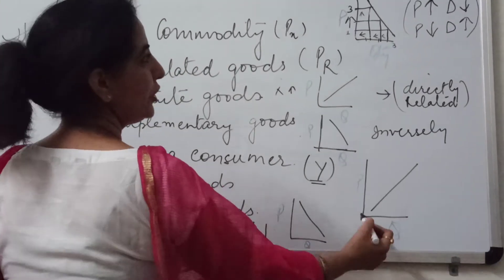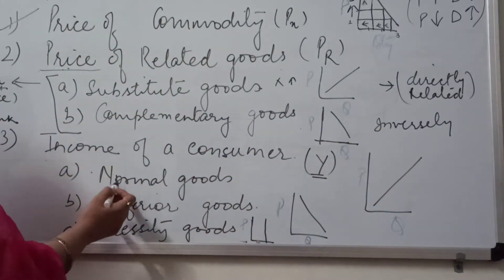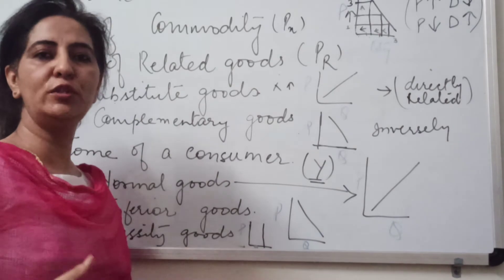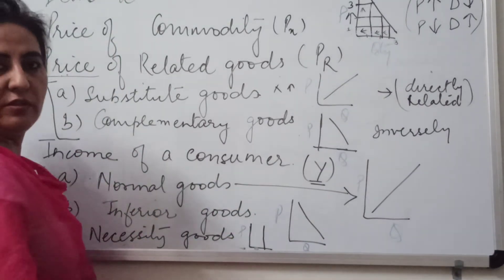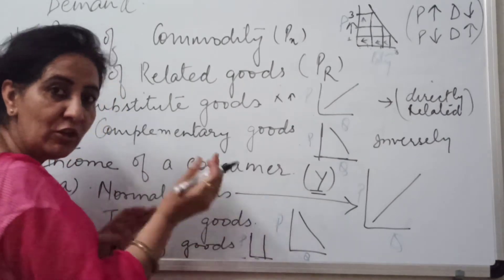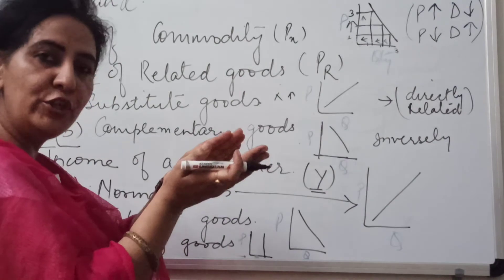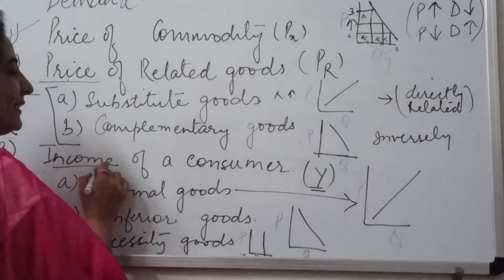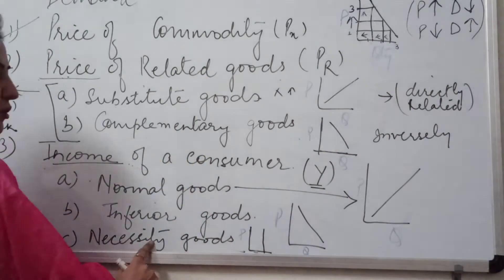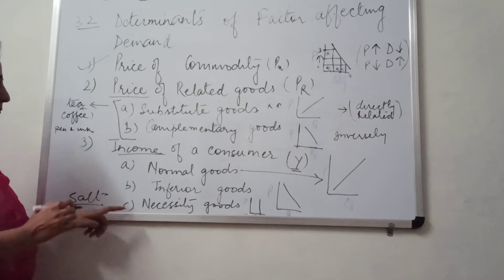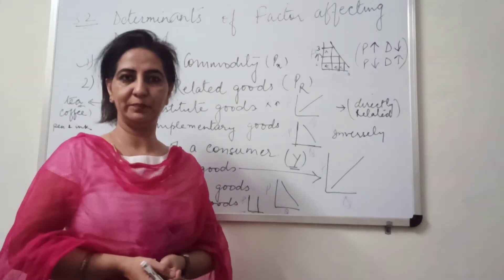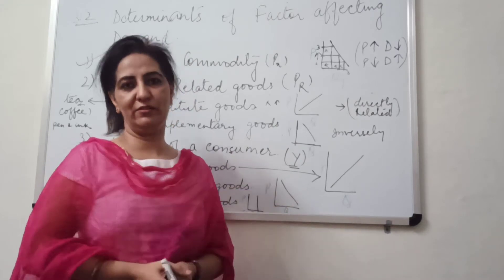In normal goods, there is a direct relation — as income increases, you purchase more of these goods, for example, car, fridge, clothes, home, and so on. In inferior goods, as your income goes up, you will demand them less, because you have shifted from a lower income group to a higher one. With increase in income, you demand less inferior goods. Whereas necessity goods, such as salt — whether price or income goes up or down, you will demand them in the same manner regardless of the situation.